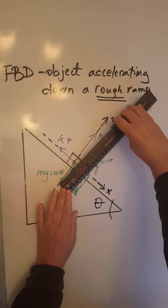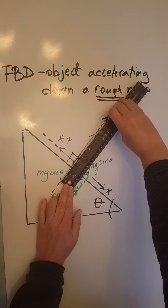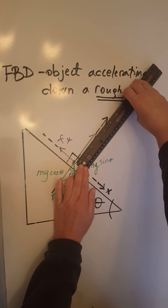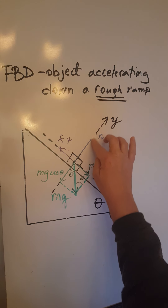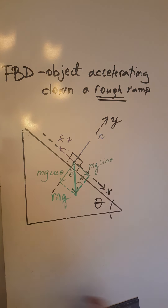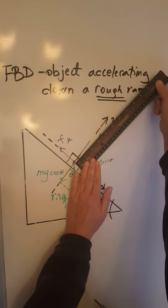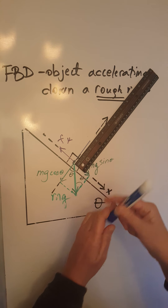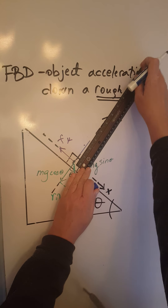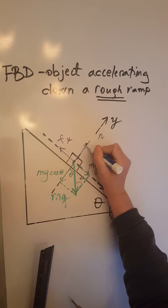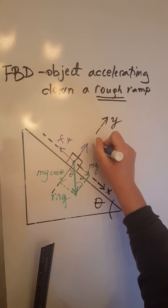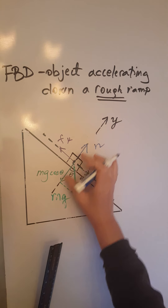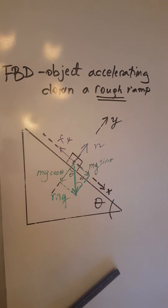We perform a magnitude check: mg cosine theta measures two centimeters, and the normal force measures three centimeters. Easy fix — we shorten the normal force to also two centimeters. Now the normal force is exactly the same length as mg cosine theta, so the y forces are balanced.